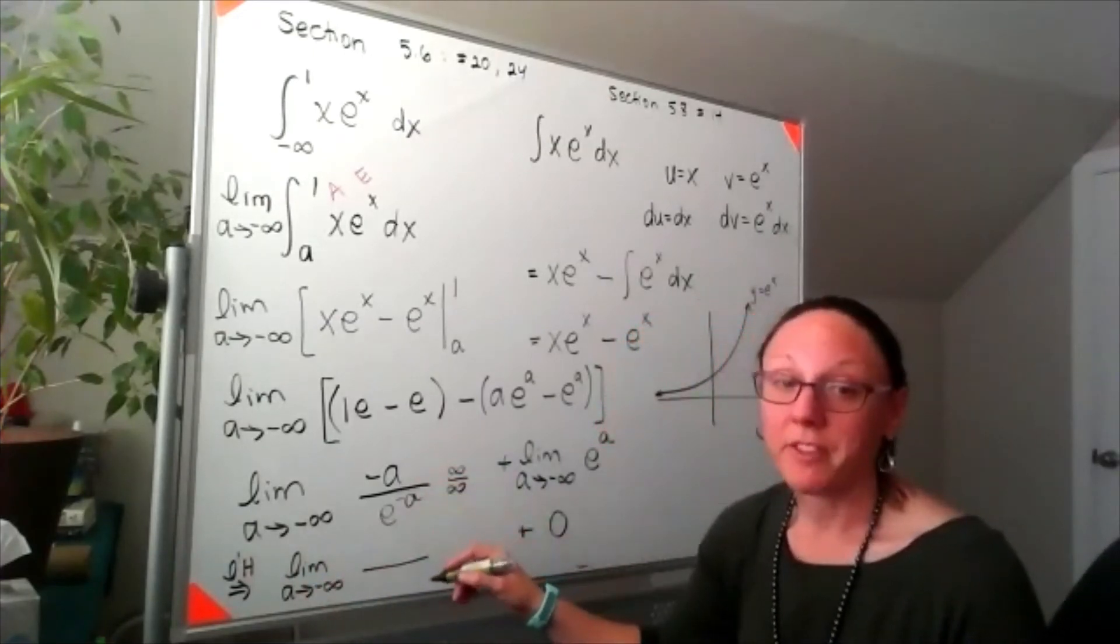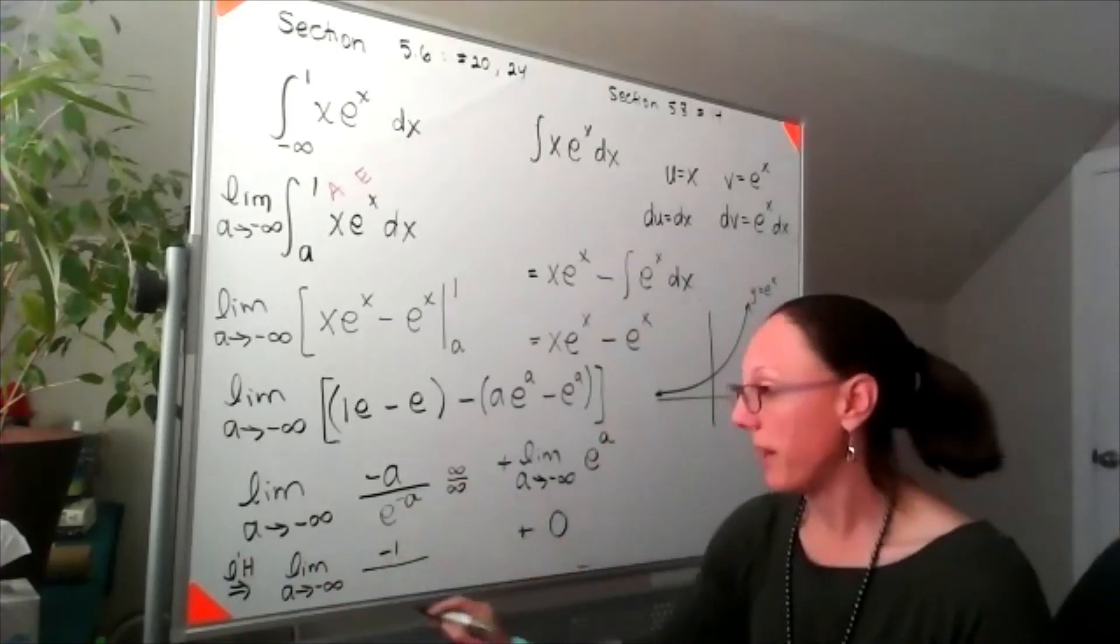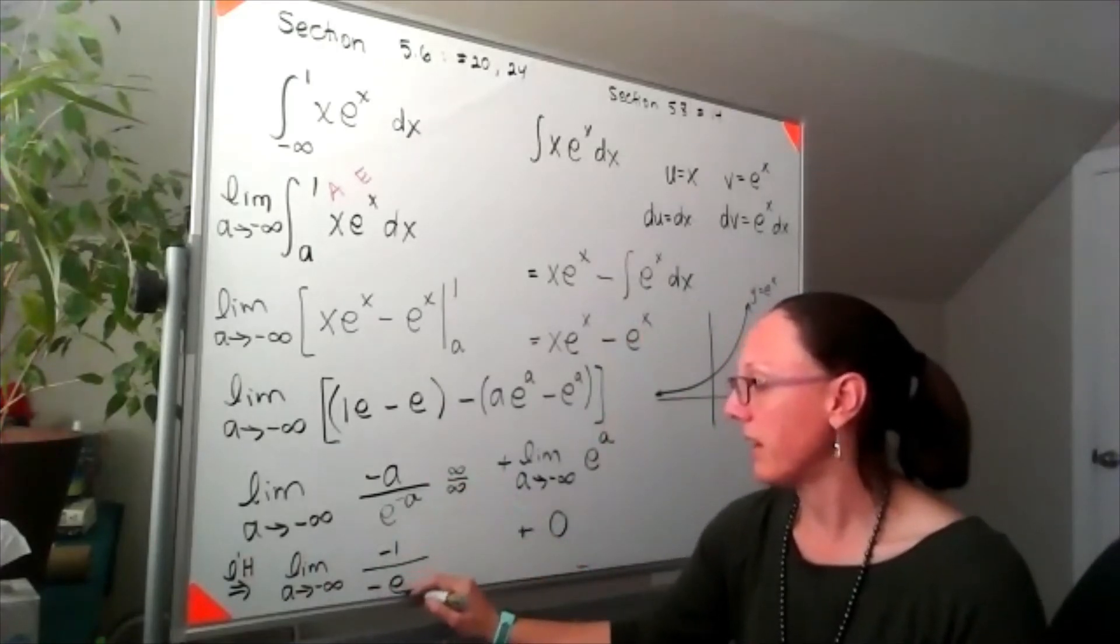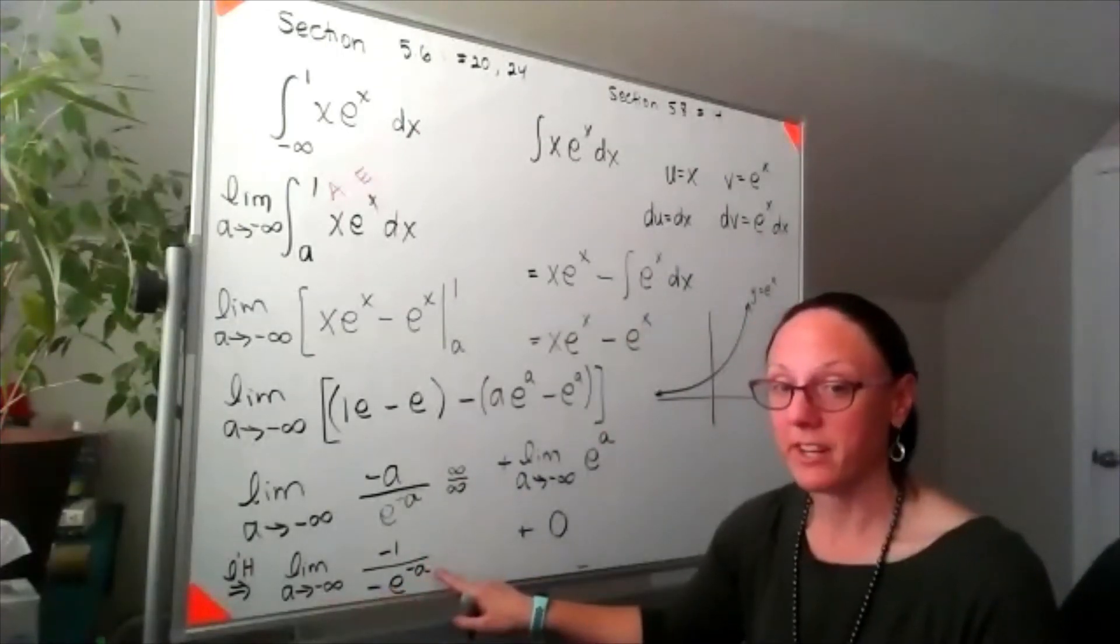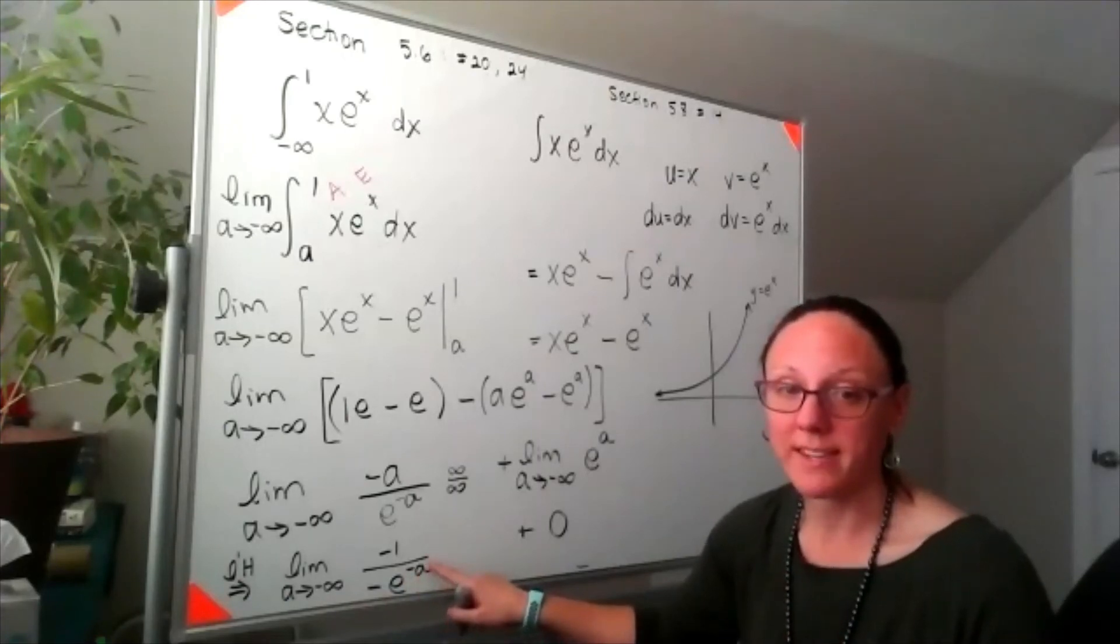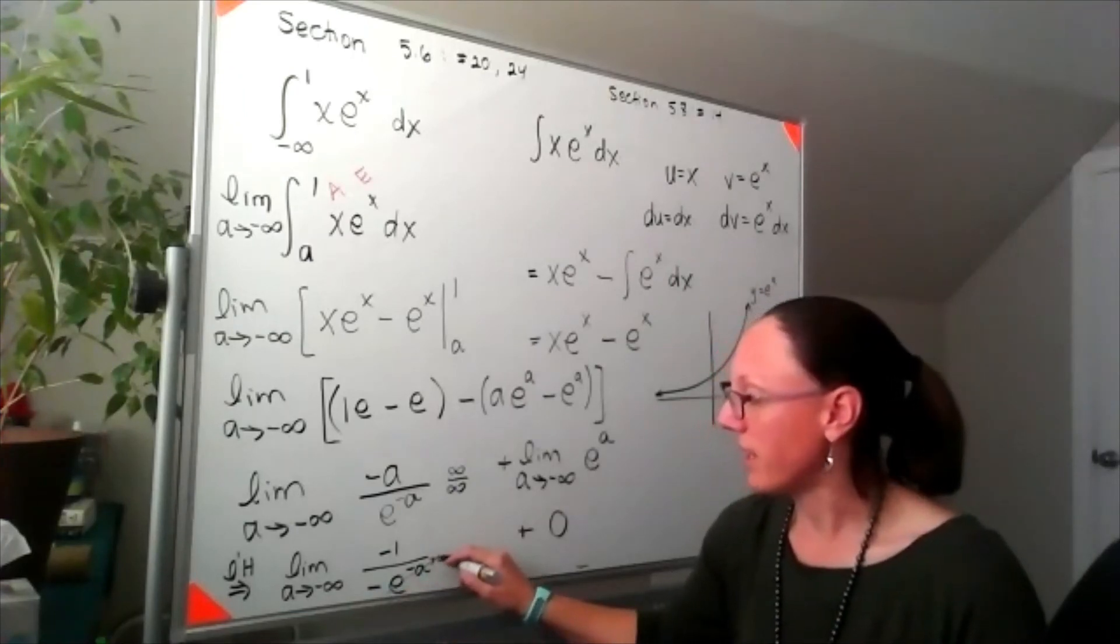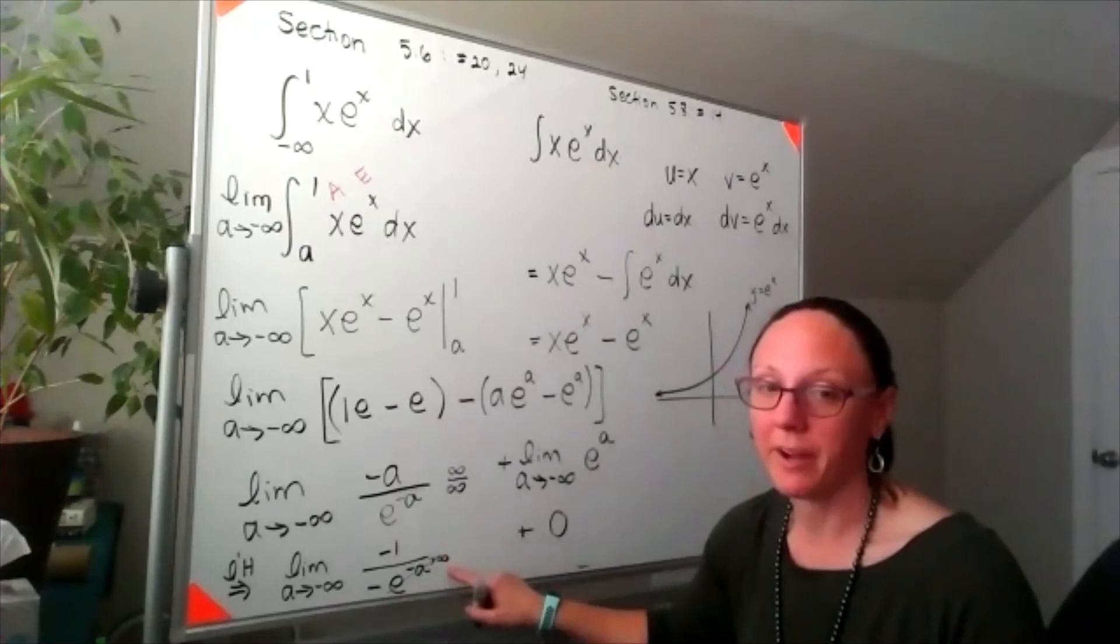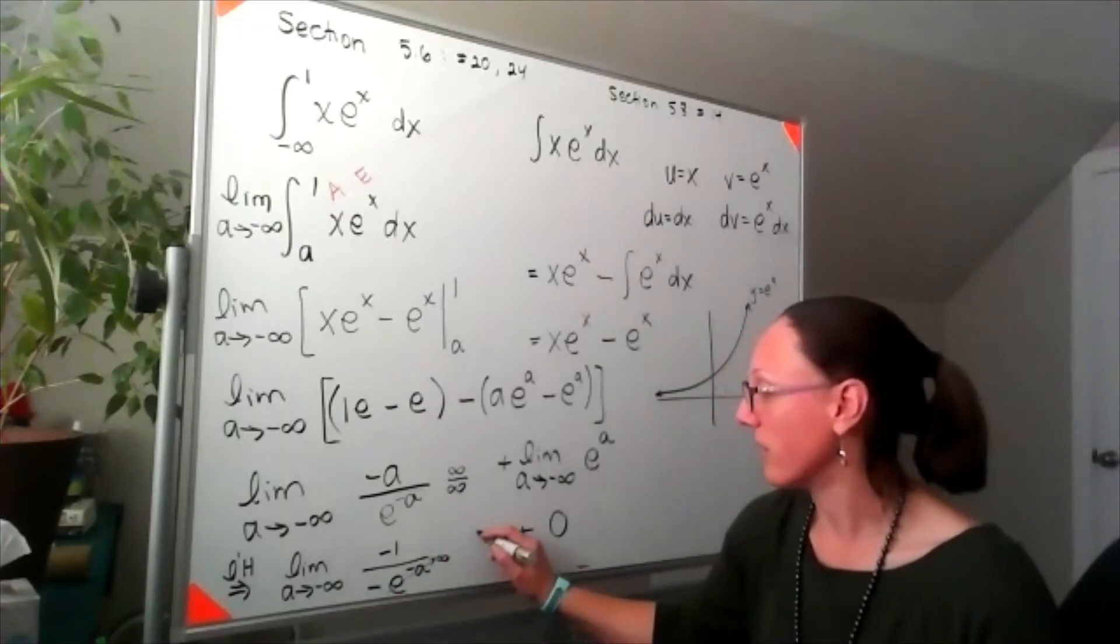If I take the derivative of the top, I get negative one, and taking the derivative of the denominator, I'll have negative e to the negative a. Now when I plug the negative infinity in, the negative and negative infinity will cancel out making this positive, so I've got e to the positive infinity, so this is going to infinity. And I have negative one divided by infinity, which means this is also going to zero.